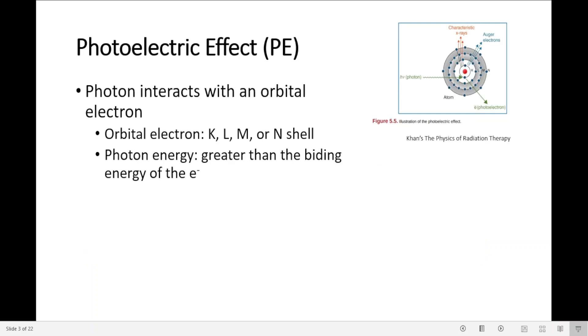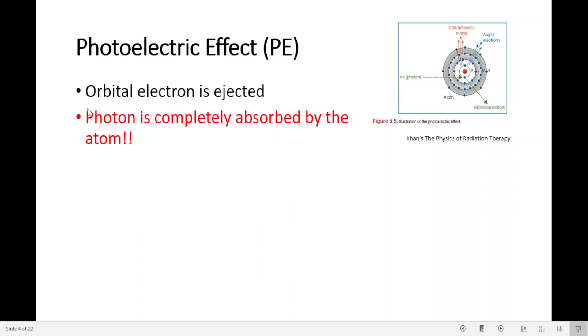Photoelectric effect. What's going to happen: we will have an incident photon that interacts with an orbital electron. Orbital electron can be from K, L, M or N shell. Photon energy has to be greater than the binding energy of that electron. The orbital electron is ejected in the process and the photon is completely absorbed by the atom.